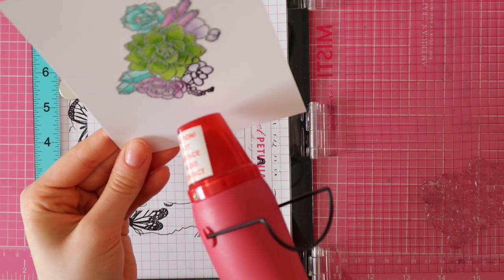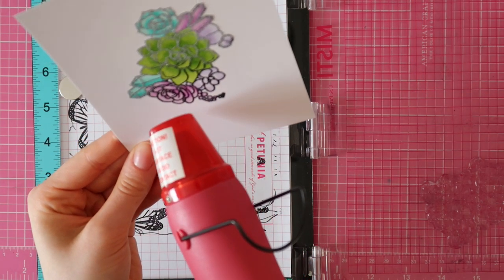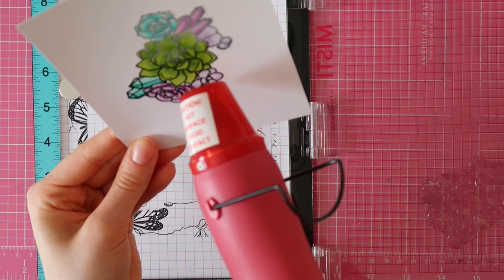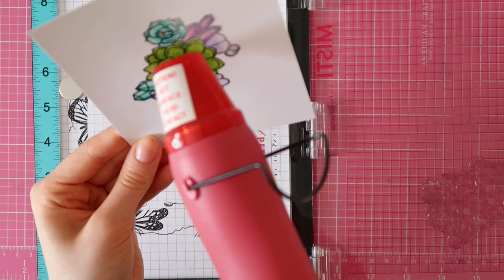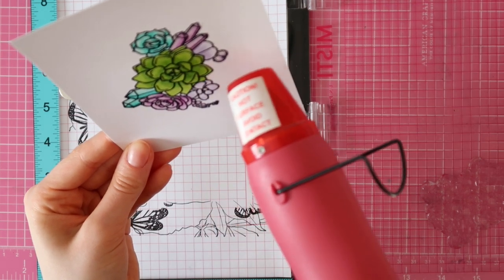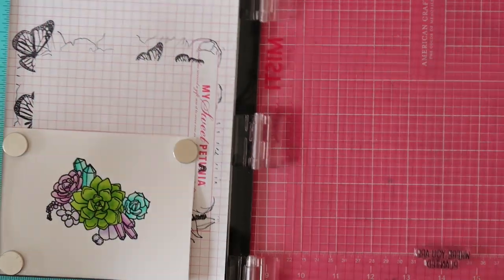I recommend to heat emboss your images after coloring them with the alcohol markers, since it's just faster to color them without the embossing powder on there already. It just makes the blending so much easier and faster.